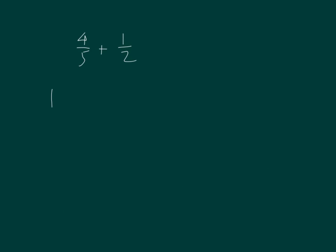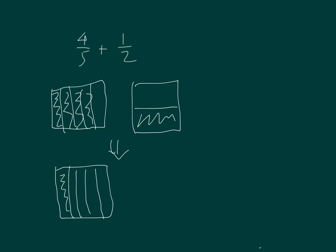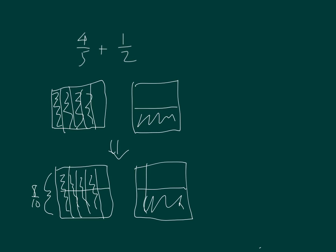Here I have 4 fifths plus 1 half. Let's model 4 fifths first, and then we model 1 half. Let's make equivalent fractions. 4 fifths becomes 8 tenths. I had 1 half, and I have 5 tenths.